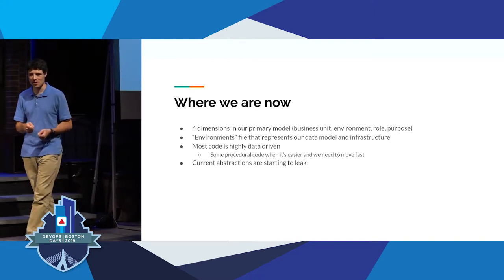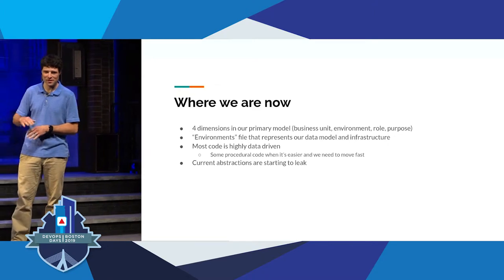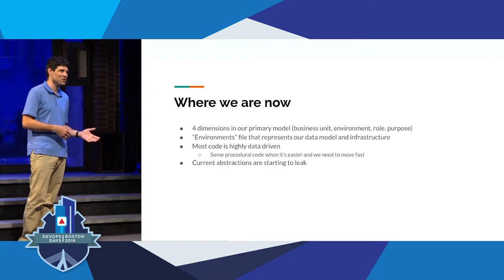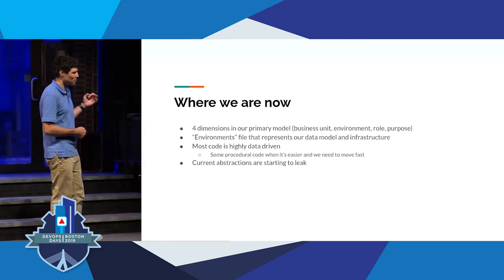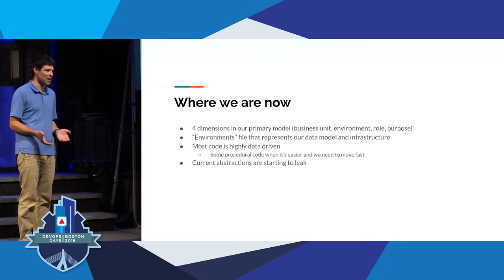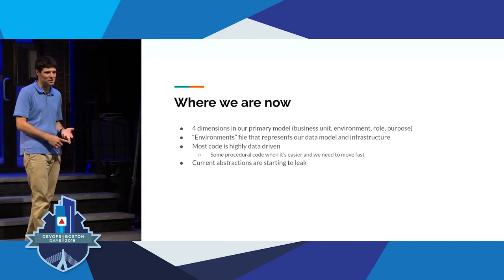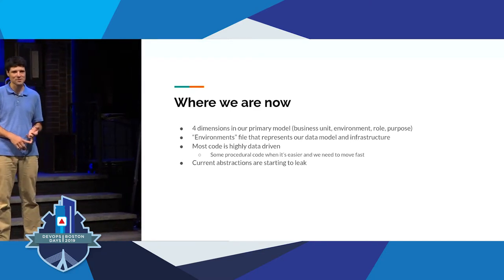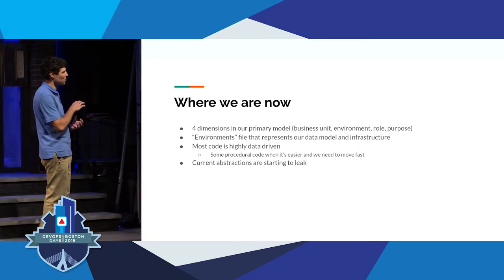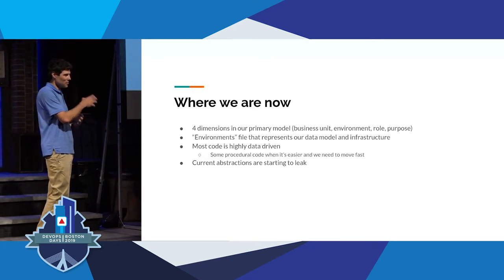Having that high-level view makes it a lot easier to understand what everything really means when we go into the AWS console. All of the code we've written is very data-driven. We don't rely on copying files and making a couple of changes, because then you get drift — you don't have the same logic running everywhere. We lean heavily on data inputs. Pretty much every tool we're using has that capability: Terraform has user vars, we use the pillar system in SaltStack, Ansible has its own vars capabilities.